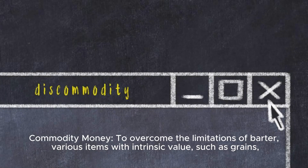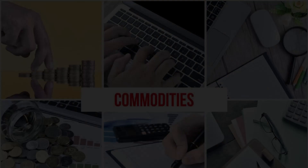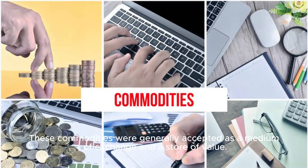Commodity Money: To overcome the limitations of barter, various items with intrinsic value, such as grains, livestock, shells, and precious metals like gold and silver were used as money. These commodities were generally accepted as a medium of exchange and a store of value.